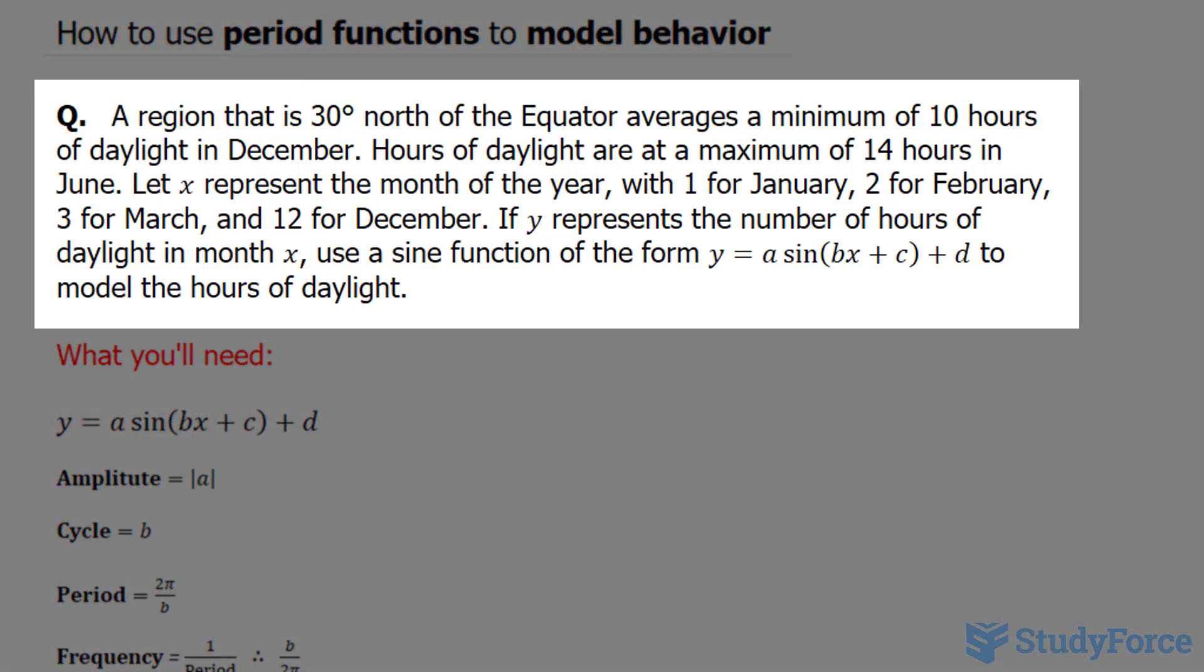The question reads: a region that's 30 degrees north of the equator averages a minimum of 10 hours of daylight in December. Hours of daylight are at a maximum of 14 hours in June.